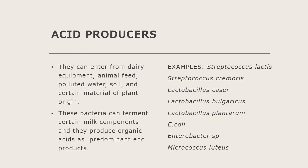Starting with acid producers — they can enter from dairy equipment, animal feed, polluted water, soil, and certain material of plant origin. The fodder given to animals can also be a source of entry for these bacteria. These bacteria ferment certain milk components and produce organic acids as their predominant end product, which is why they are grouped as acid producers.